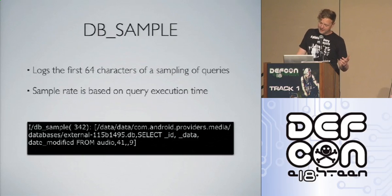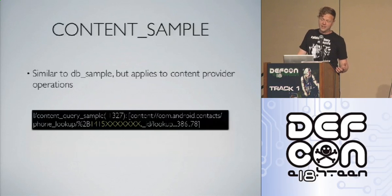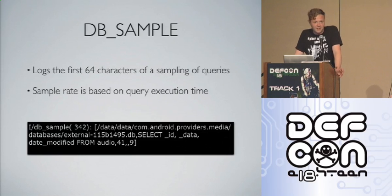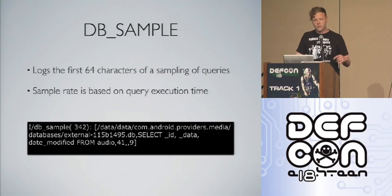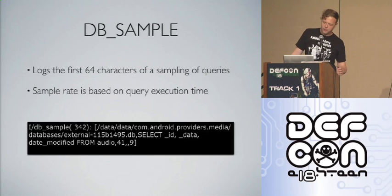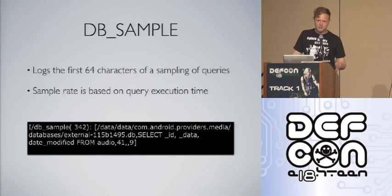One of the first things we found with SQL keywords: in Android 2.2, there's new log data appearing in the event log. There's a hook in the SQLite driver that logs the first 64 characters of a sampling of queries run through that driver, sampled based on query execution time. We don't see every query, but we see a subset accessing databases all over the system. Developers should be aware: don't put sensitive data directly into SQL statements — parameterize them, because they may show up in places you didn't intend.